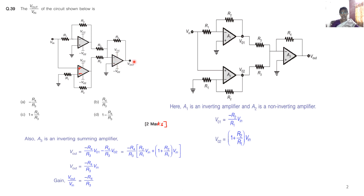Now I am going to explain how to find out the overall gain V_out by V_in. To find out the overall gain, first we find the output of the first operation amplifier A1. V_naught_1 is equal to minus Rf by R1 into V_in. Here, the feedback resistance Rf is R2 and R1 is the input resistance. So, V_naught_1 = -(R2/R1)·V_in.